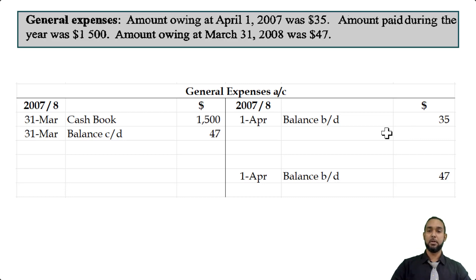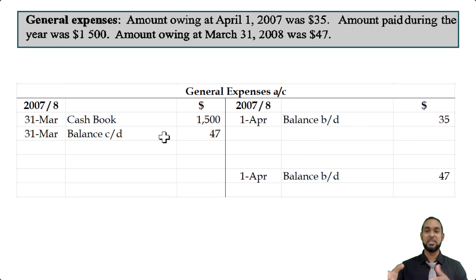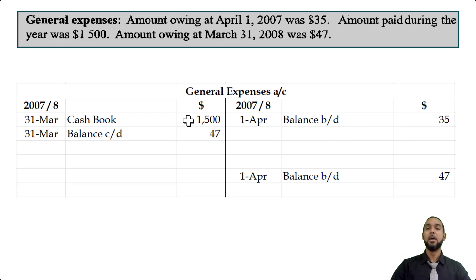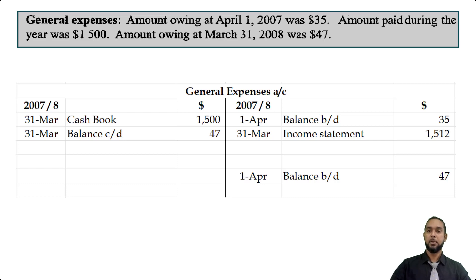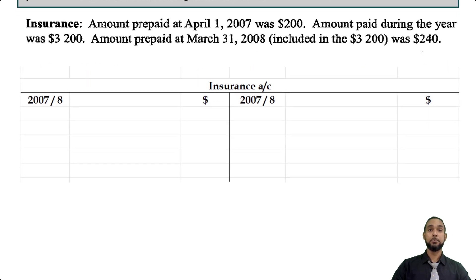We're missing a figure — that's the income statement figure for general expenses. How do we find it? You balance off the account. Add up the items on the debit side and subtract the item on the credit side and you get the missing income statement figure. When we total both sides we get the same total.